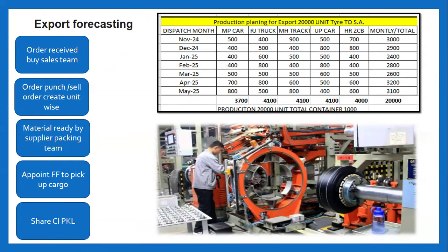Once the tires are ready, intimation needs to be given to the logistics team. They will arrange the empty containers for the dispatch planning. Once we receive the order from the sales team — here we are the logistics team — the sales team contacts the overseas buyers and processes this order. To receive the order, a purchase order needs to be punched in SAP.